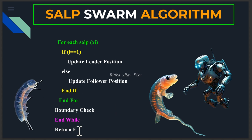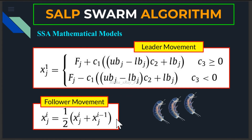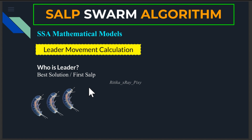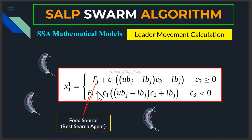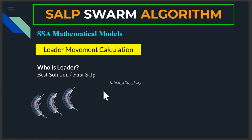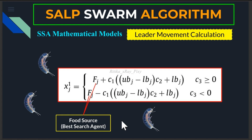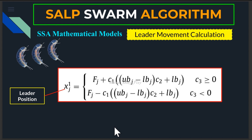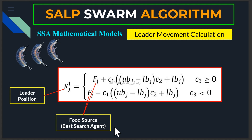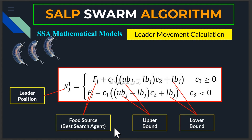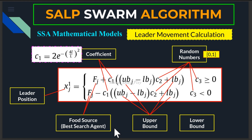Once the stopping condition is met, we stop and display the best solution found. For the mathematical model of leader movement, the leader's position is updated with respect to the best solution found so far, which is similar to exploitation. The food source F is considered the best solution, and the leader moves toward it. The equation updates the leader position in the j-th dimension using Fj (food source position), lower and upper bounds, and three random numbers c1, c2, c3 that guide the exploration and exploitation processes.